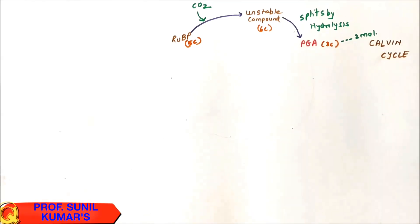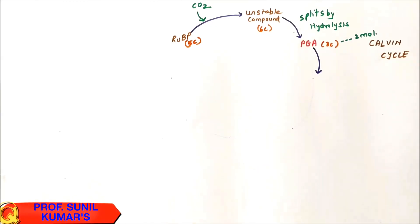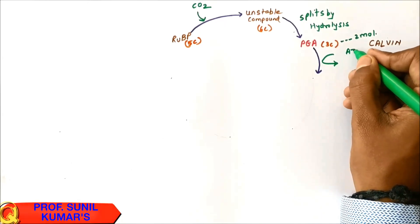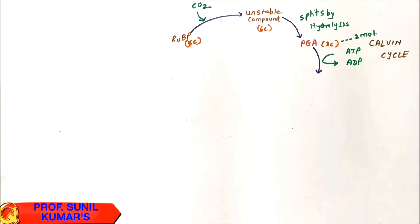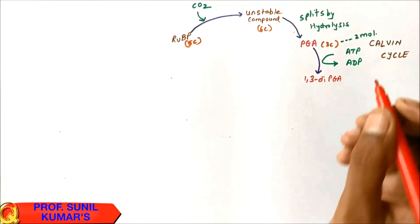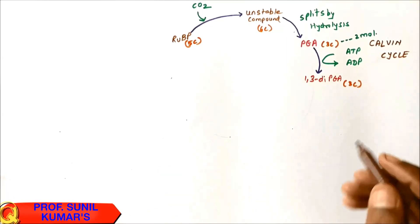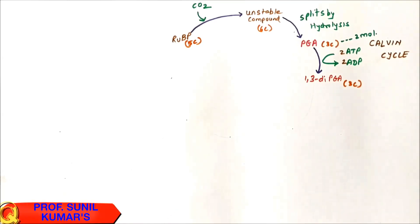Two molecules of PGA are formed because the six-carbon compound breaks into two three-carbon units. This PGA then undergoes phosphorylation — it receives a phosphate from ATP, converting ATP to ADP. The result is 1,3-diPGA (diphosphoglyceric acid), still a three-carbon compound. We write two ATP and two ADP because two molecules of PGA were formed.